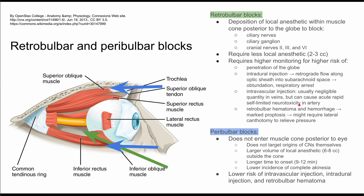The neurotoxicity will start very quickly but will also end relatively quickly, though intravascular injection is still a possible side effect. The last possible side effect is retrobulbar hematoma and hemorrhage. This can cause marked proptosis of the eye, and it might require lateral canthotomy to relieve the pressure behind the eye.